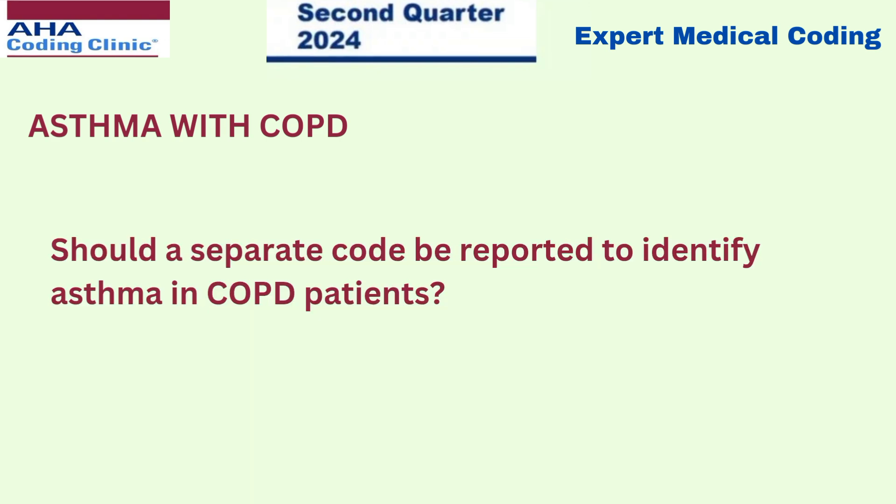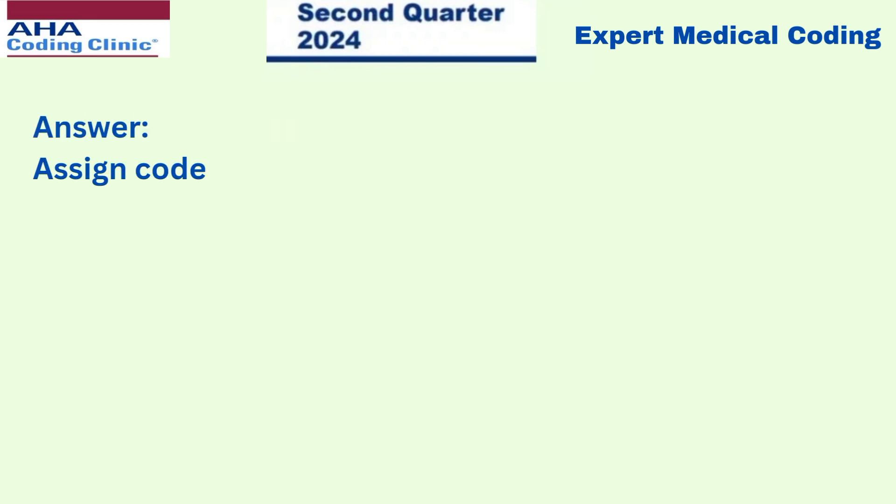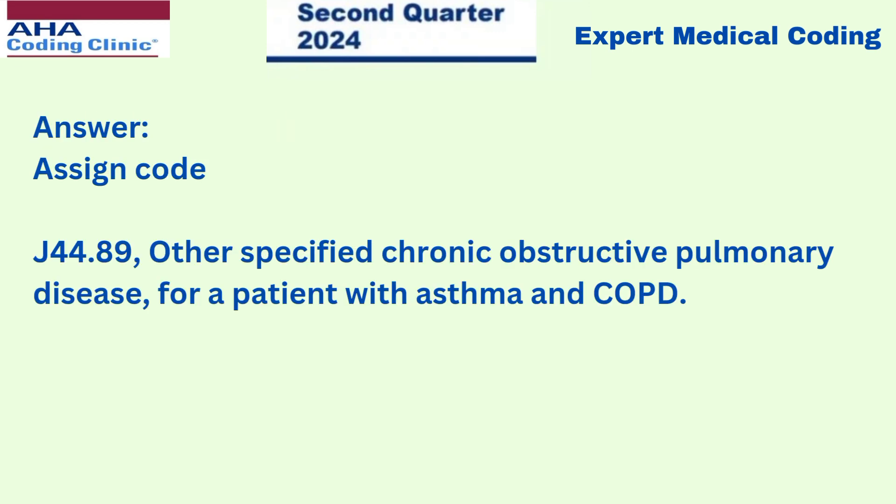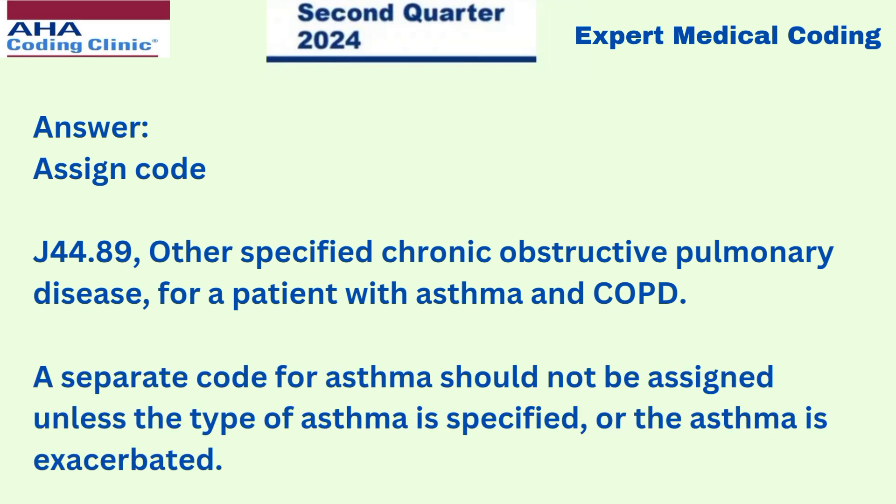The question is: should a separate code be reported to identify asthma in COPD patients? The answer is to assign code J44.89 — other specified chronic obstructive pulmonary disease — for a patient with asthma and COPD. A separate code for asthma should not be assigned unless the type of asthma is specified or the asthma is exacerbated.